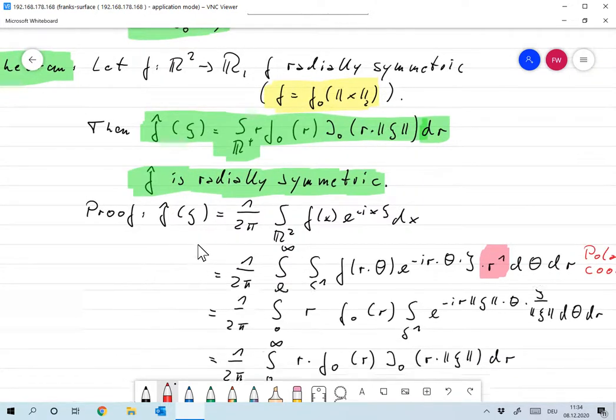Okay, let's prove that. And so we Fourier transform of psi, we plug in the definition, that's 1 over 2 pi integral F of X, E to the minus I X psi dx.